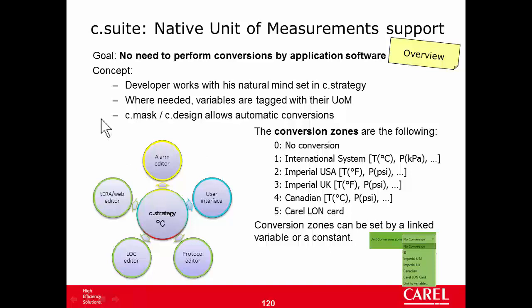After that, C-Mask and C-Design implement automatic conversion. The rule is based on six conversion zones, which are collections of units of measure. For example, in the International System (SI), temperature is expressed in Celsius and pressure in kilopascals. In the Imperial USA zone, temperature is in Fahrenheit and pressure in PSI.